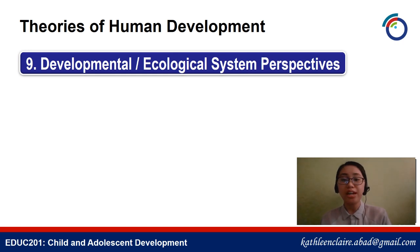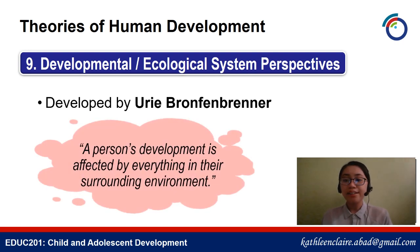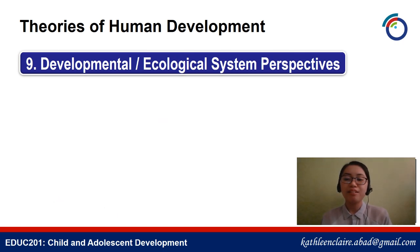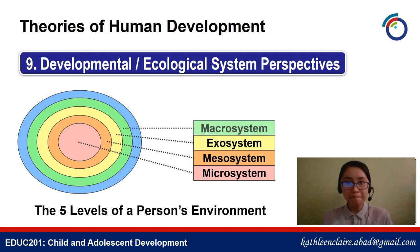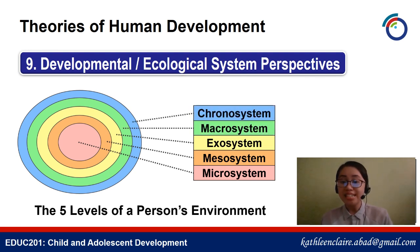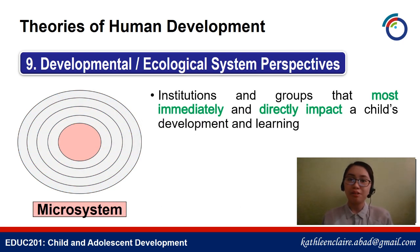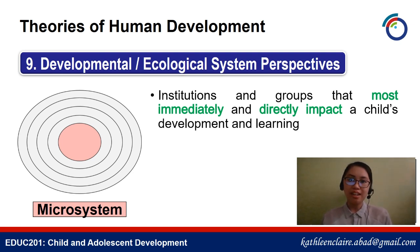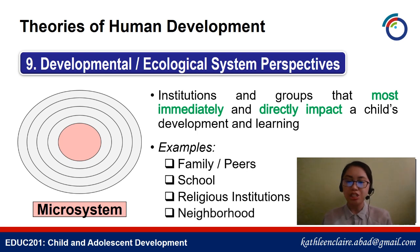Ninth, we have the developmental or ecological system perspectives, developed by Urie Bronfenbrenner. He said a person's development is affected by everything in their surrounding environment. He listed five levels of a person's environment. First is the microsystem — the immediate environment of a child, the institutions and groups that most directly impact a child's development, such as family, peers, school, religious institutions, and neighborhood.